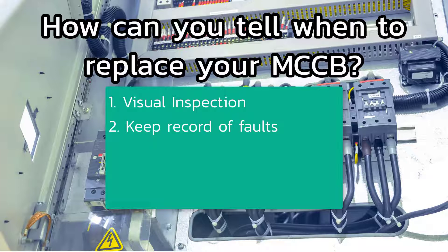The second method is to keep a record of short circuit faults when they occur. If at least two short circuits have occurred, then you would need to replace the MCCB. You can determine whether it was a short circuit from the load or the condition of the wiring.